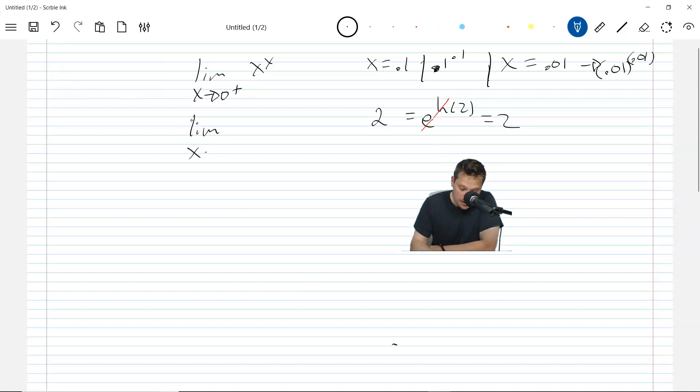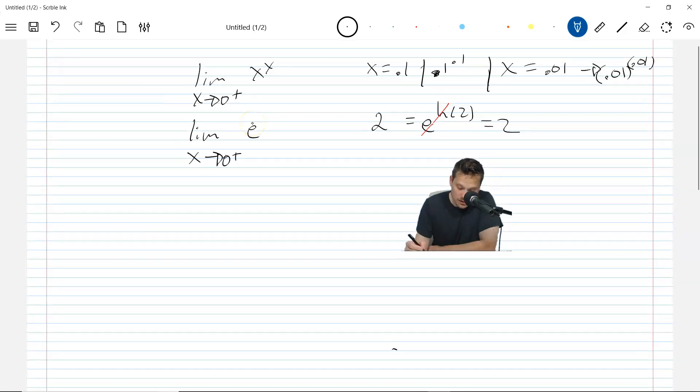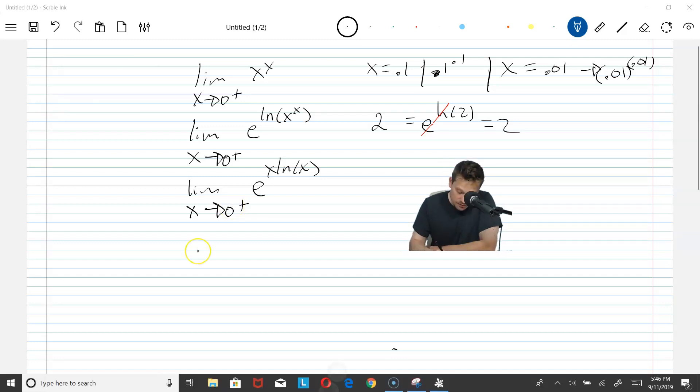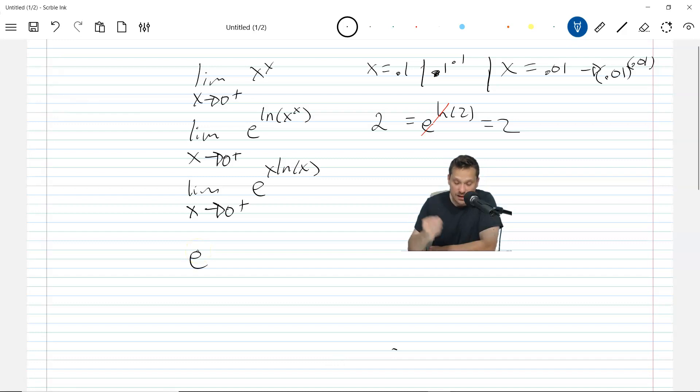We need to rewrite it using e. So it's going to look like this: the limit as x approaches 0 from the right of e to the ln of x raised to the x. Now you might remember there's a rule for logs which says that anything in the exponent here can be brought and placed in front of the logarithm, the power rule. So this becomes the limit as x approaches 0 from the right of e to the x ln of x. Now the e function is continuous, which means you can take the limit and place it in the top. So I'm going to have e raised to the limit as x approaches 0 from the right of x ln of x.